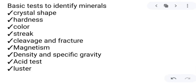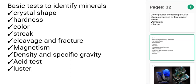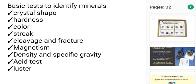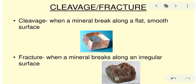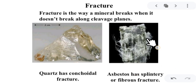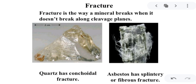Another test is cleavage and fracture. Observing the way a mineral breaks can help you identify it. If a mineral breaks along one or more smooth, flat surfaces, it has cleavage. But if a mineral breaks along an irregular surface, it has fracture. For example, asbestos has a splintery or fibrous fracture, and quartz has a conchoidal fracture — it doesn't break into flat, smooth surfaces. If it doesn't break to a flat surface, the mineral has fracture, not cleavage.